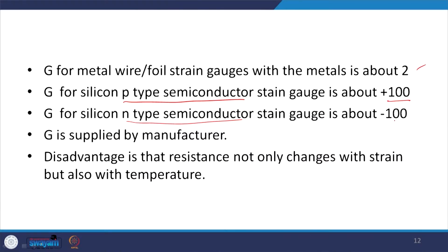The gauge factor G for metal wire or foil strain gauges is about 2, whereas G for silicon P-type semiconductor strain gauges is about +100, and for N-type semiconductor strain gauges G is around -100. This G value is usually supplied by the manufacturer. A disadvantage of strain gauges is that resistance changes not only due to strain but also with temperature, so we must always keep this factor in mind and work to eliminate the resistance change caused by temperature.